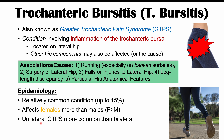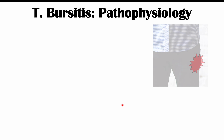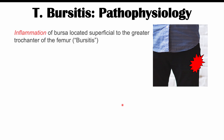Unilateral greater trochanteric pain syndrome is more common than bilateral. Now let's talk about the pathophysiology. As the name implies, it is a condition involving inflammation of a bursa located superficially to the greater trochanter of the femur — meaning it would be bursitis.